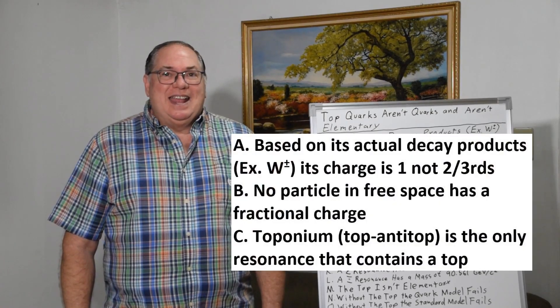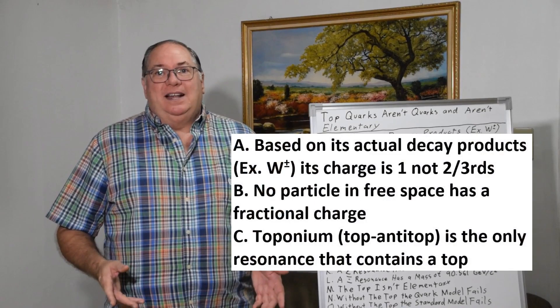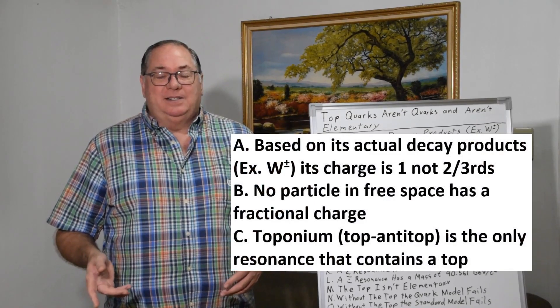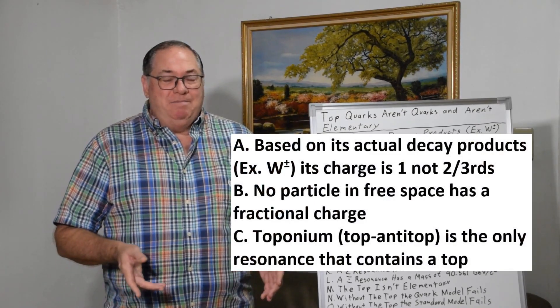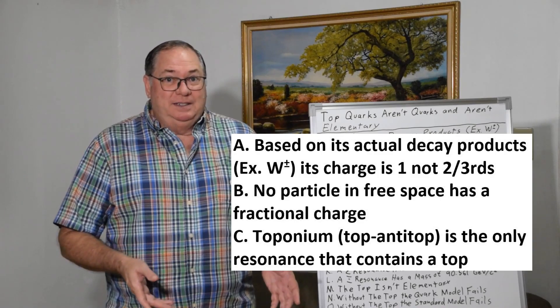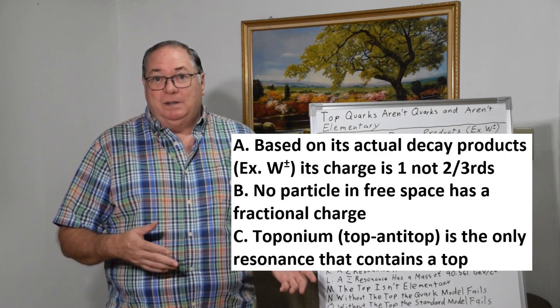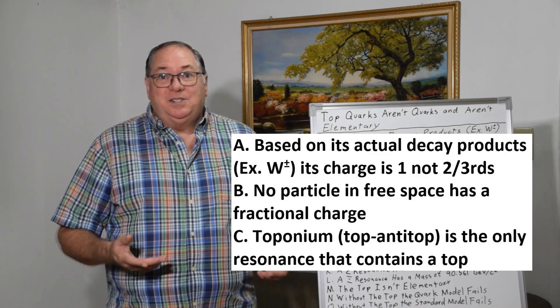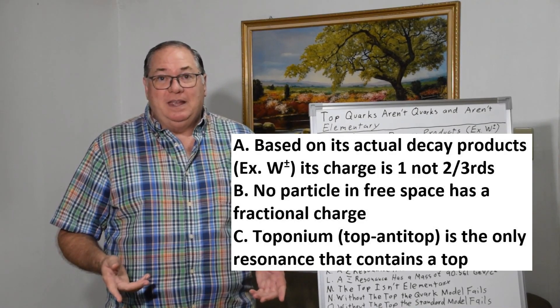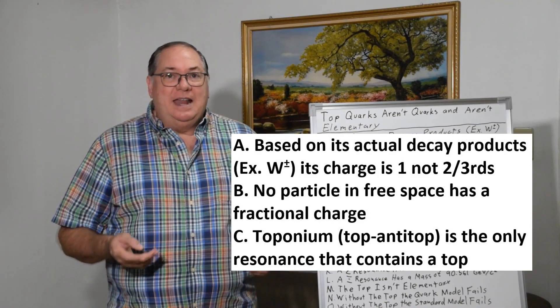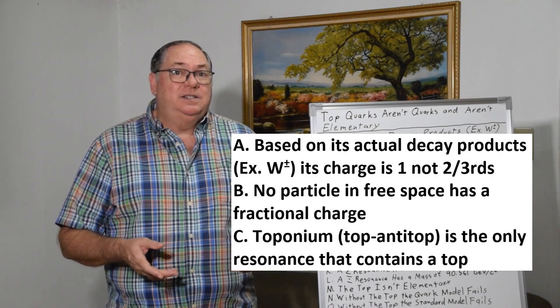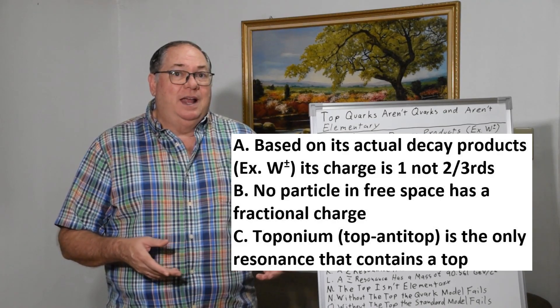First of all, based on its actual decay products, principally a W boson with plus or minus one charge, it has a charge of plus or minus one. Now they'll say that it decays to a W and a bottom quark so that they get the two-thirds.